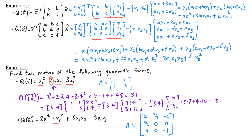So the matrix of this quadratic form is [2, 5/2, -4; 5/2, 0, 0; -4, 0, -1].